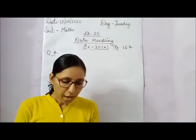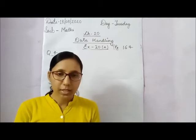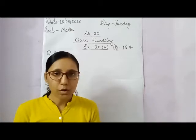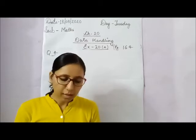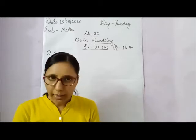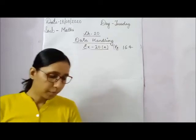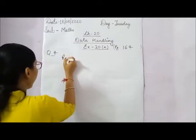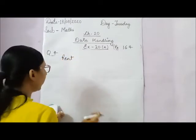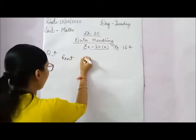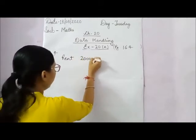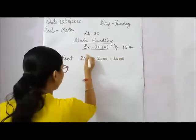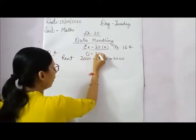Here, one complete circle is showing two thousand rupees. We have to answer some questions. First: what does the family spend the most on? You have to count all the numbers shown in the pictures. For rent, there are three complete pictures — two thousand plus two thousand plus two thousand — because one complete picture shows two thousand rupees.